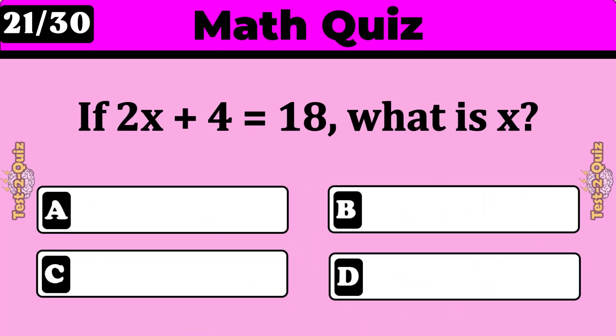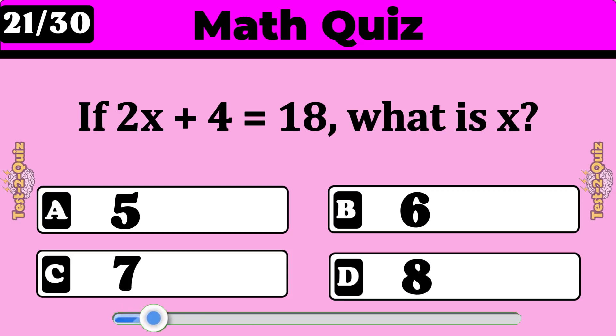If 2x plus 4 is equal to 18, what is x? 7.